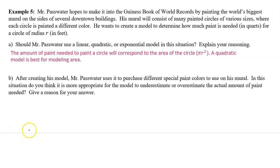Part B. After creating his model, Mr. Passwater uses it to purchase different special paint colors to use on his mural. In this situation, do you think it is more appropriate for the model to underestimate or overestimate the actual amount of paint needed? Give a reason for your answer. The model should be designed to overestimate, so Mr. Passwater does not run out of paint.